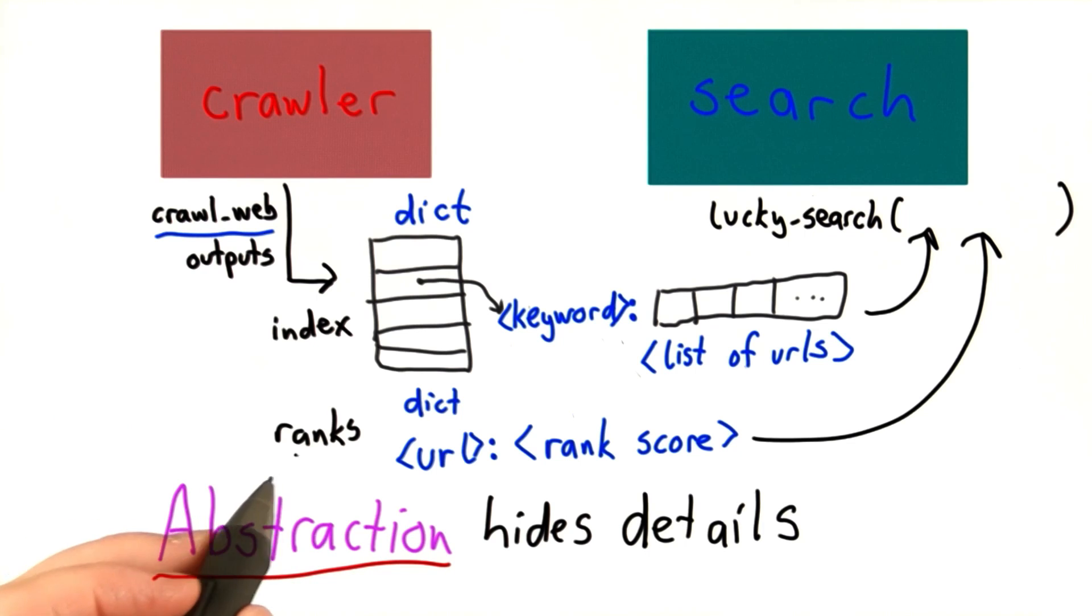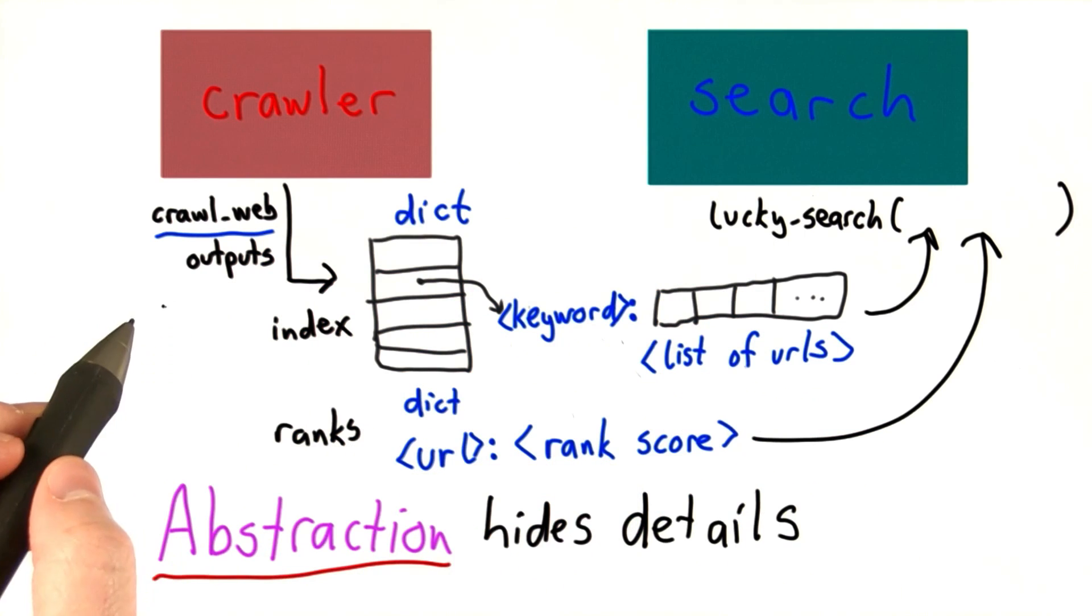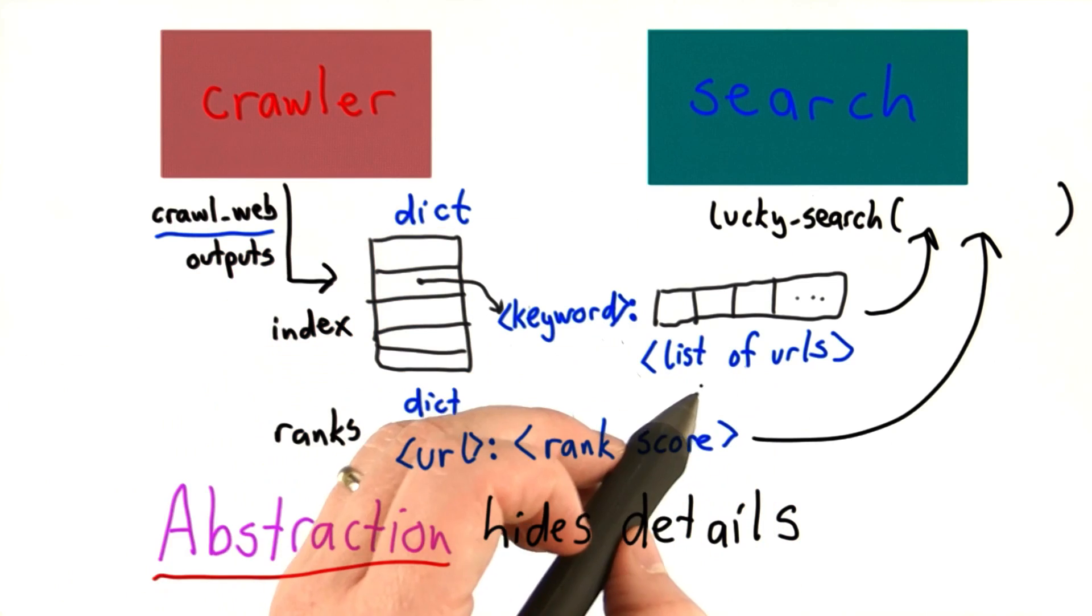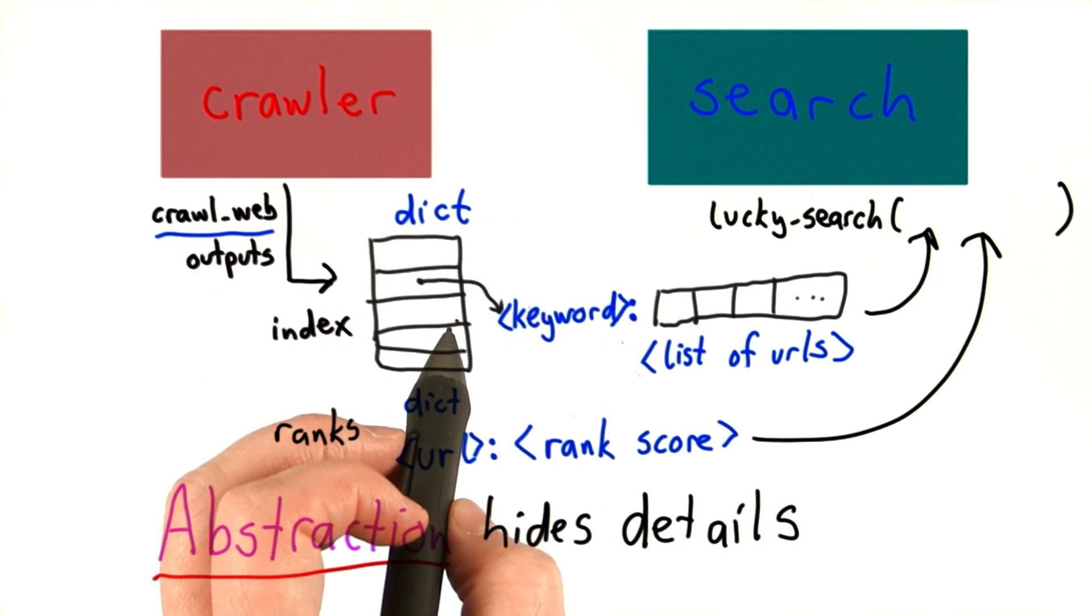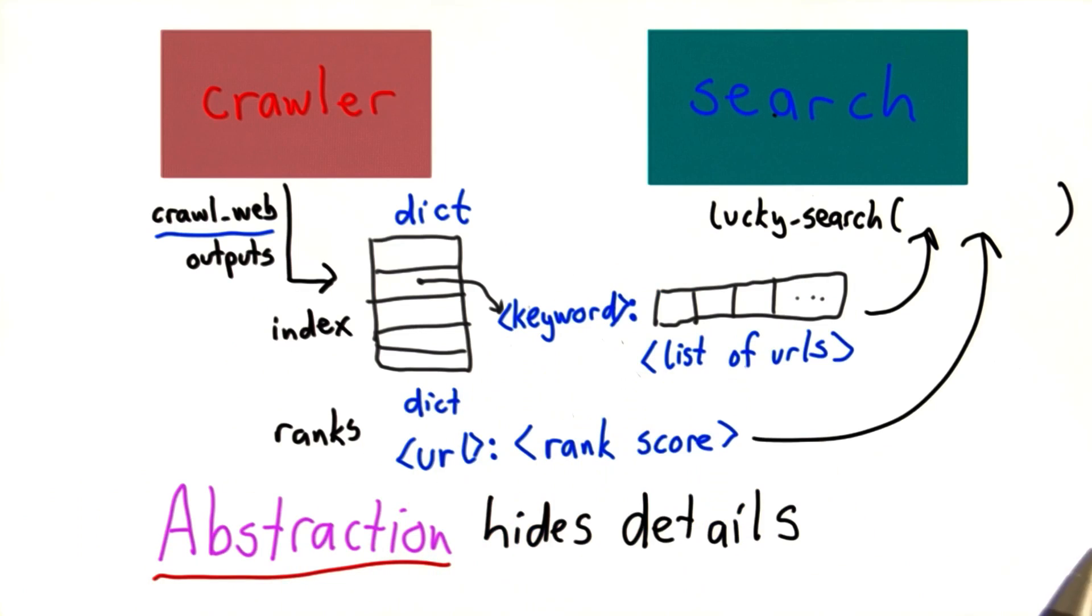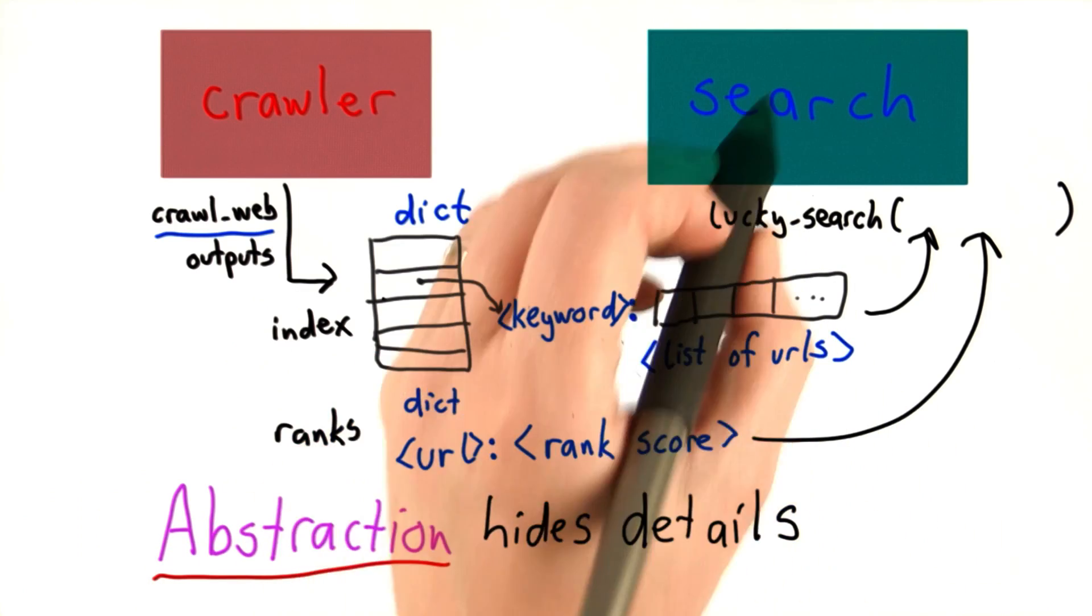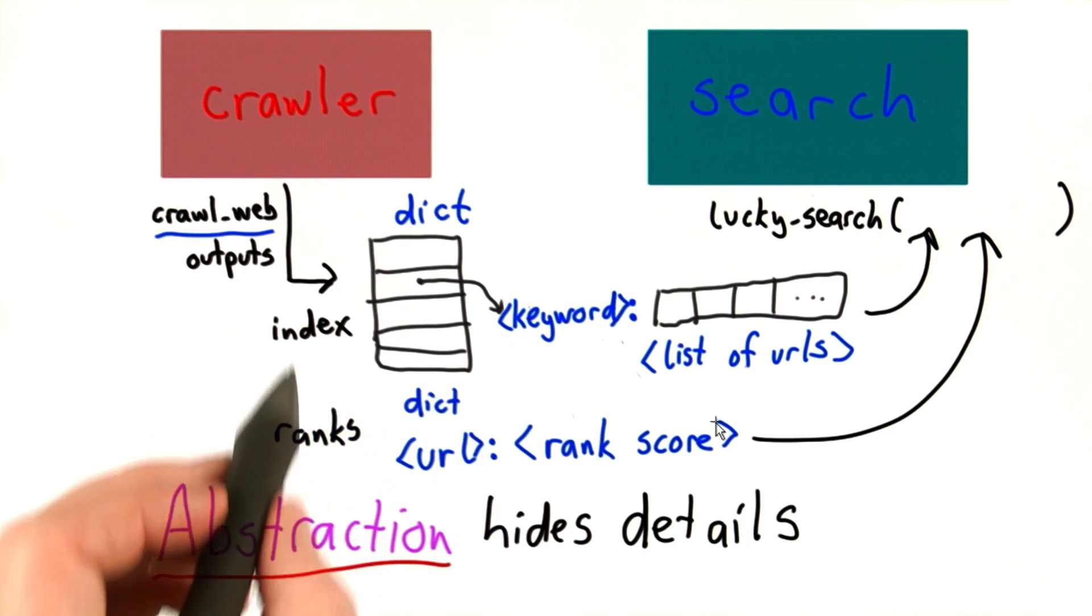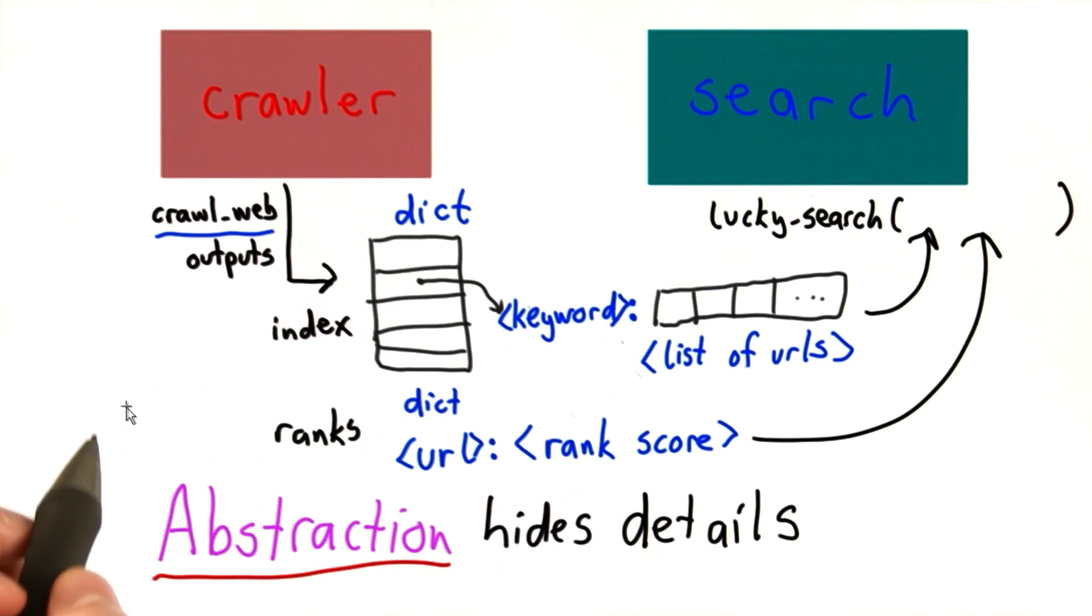Abstraction is about hiding details. Our goal is to find a way to restructure the code so we don't need to know all those details. What we want is an abstract object that the crawler creates that has the properties search needs to be able to do its work, but without search needing to know the details of how that's represented. So our goal is to replace all this with one abstract object.